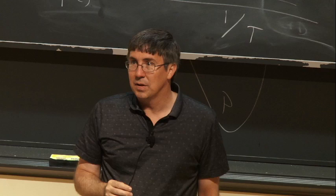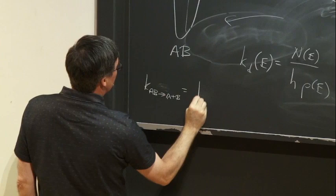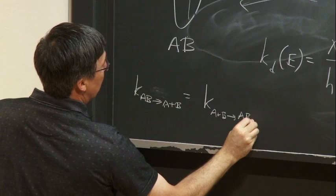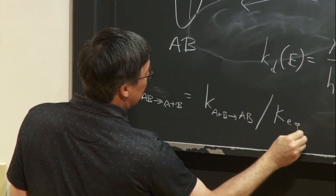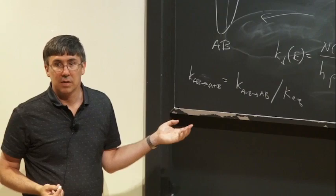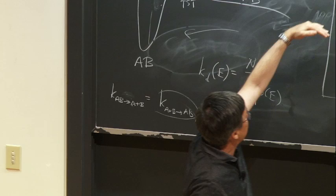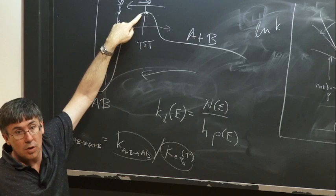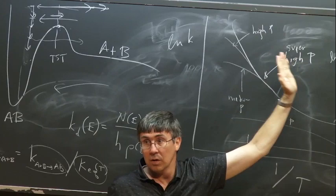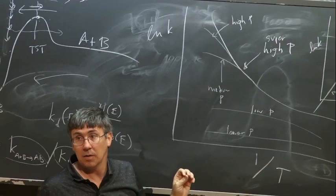The reverse rate K(AB→A+B) equals K(A+B→AB) divided by an equilibrium constant. The ratio of those two rates equals the equilibrium constant. Whatever shape the forward rate has, we just have to divide by the equilibrium constant — which depends only on temperature, not pressure. So it will change the shape. In particular, this reverse direction has a much higher activation energy, so the slope will be much steeper — much faster at high temperatures and much slower at low temperatures. But the pressure dependence will be the same.